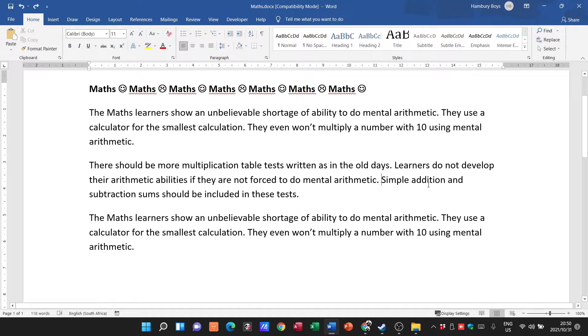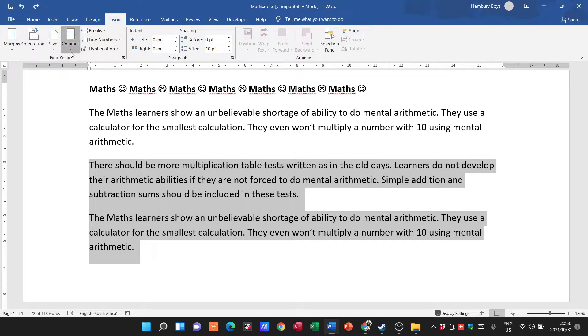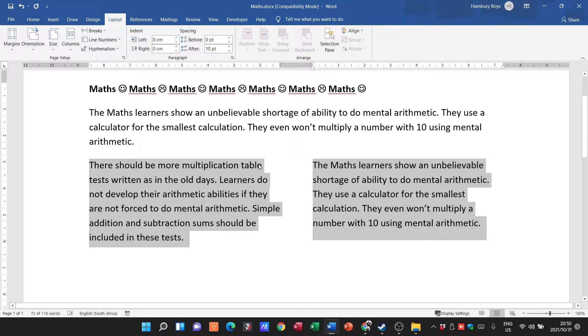So the first thing we're going to do is highlight all of the information. Then we're going to go to Layout, go to Columns, and break this up into two columns. That's the first thing we've done.